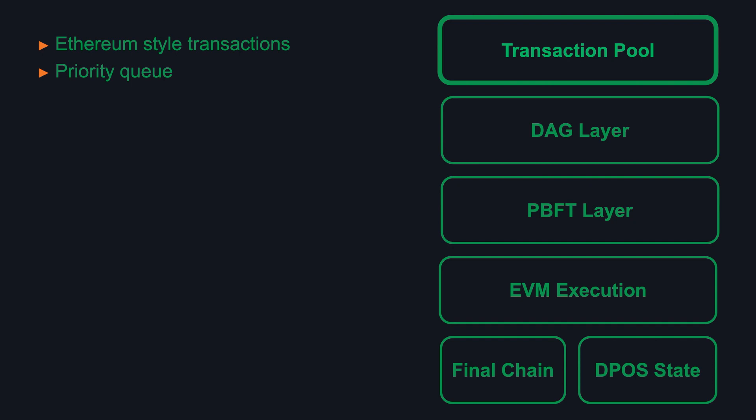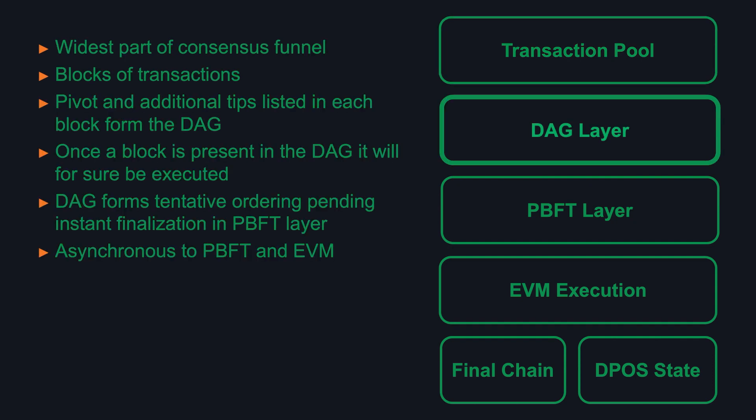The transaction pool supports Ethereum-style transactions and it's implemented as a priority queue. The DAG layer is the widest part of the consensus funnel and it's used to produce blocks of transactions. Each block also contains a list of tips observed in the DAG, including a key pivot tip. That's used to provide a consensus ordering that is not deterministic but achieves a pretty good consensus rapidly. Once a block is present in the DAG, it will for sure be executed — that's a critical property, meaning that once you see a transaction present in a DAG block, you can be sure that transaction will be included in the finalized blockchain.